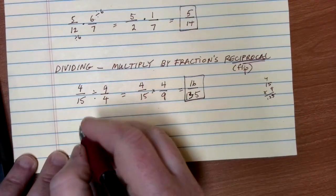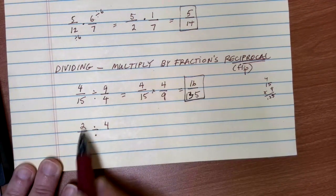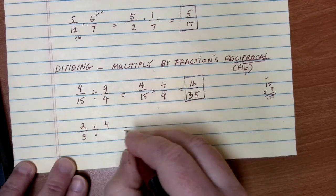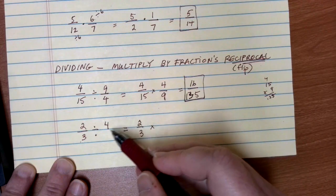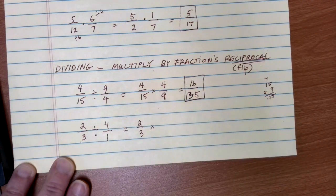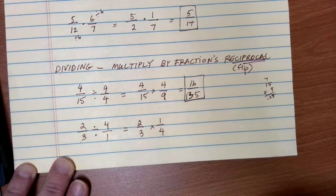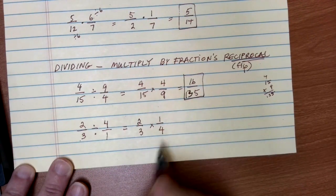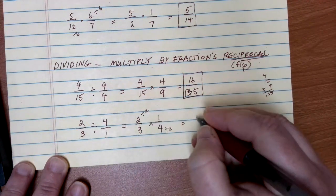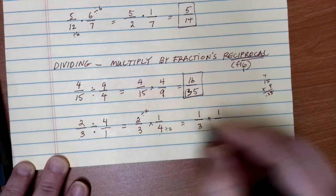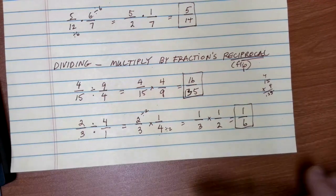One last example. Let's suppose that we need to do something like 2 thirds divided by 4. We know we're dividing with fractions because we have a fraction here. When I go to try to change my problem, we have 2 thirds, change the divide to times, but then I have to multiply by the reciprocal, or flip, of 4. You can turn any number you want into a fraction by putting it over 1. So when I flip it, I have 1 over 4. We can check if there are any common factors on the top and bottom we can divide out. We can divide the top and bottom each by 2. That gives me 1 over 3 times 1 over 2. I can multiply straight across. 1 times 1 gives me 1, 3 times 2 gives me 6, and I come up with my solution for the division problem.